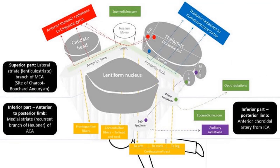The superior thalamic radiation goes into the posterior limb of the internal capsule and travels superiorly into the somatosensory cortex. The inferior thalamic radiation carries auditory information from the medial geniculate body via a portion of the internal capsule called the sublentiform internal capsule. More on the internal capsule will be covered in the basal ganglia videos.